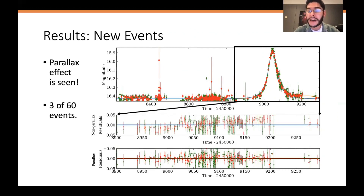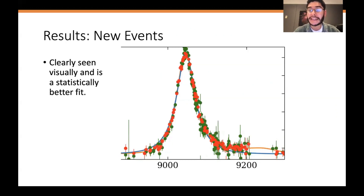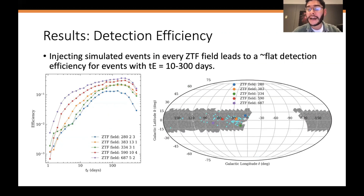Importantly, the light curve of microlensing doesn't depend on color, as expected. Three out of these 60 events show the microlensing parallax effect — this geometric effect that allows us to have an independent constraint on the lens mass. It's seen visually and is a statistically better fit than a model not accounting for the microlensing parallax.